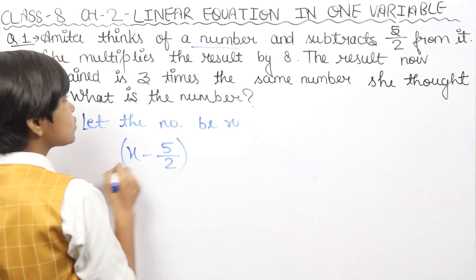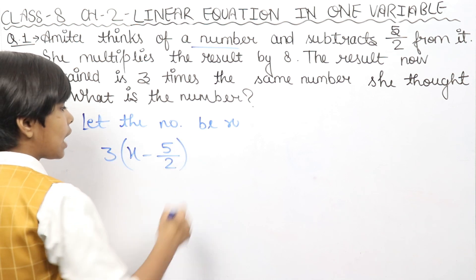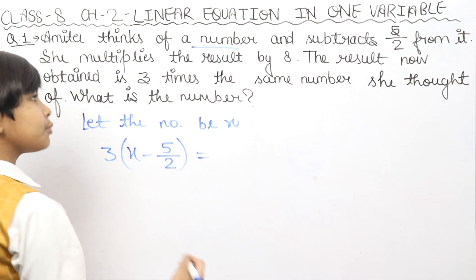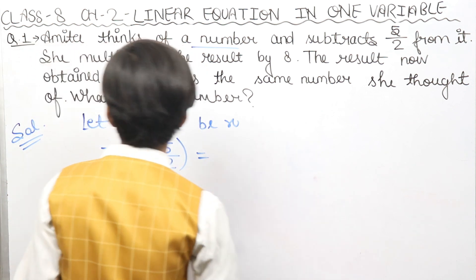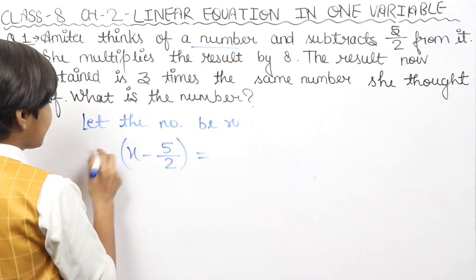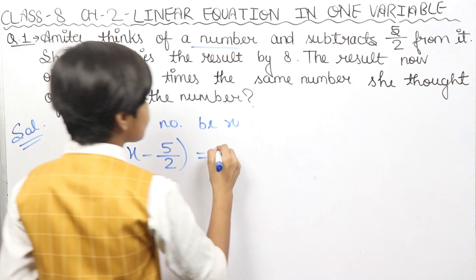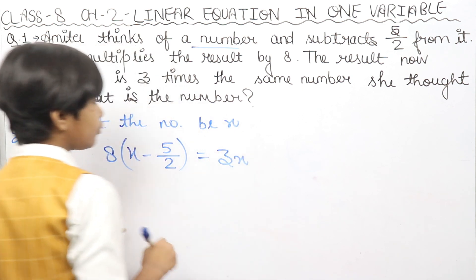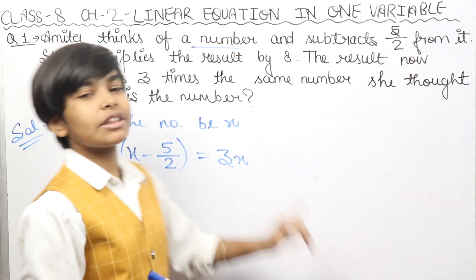Then the result was multiplied by 8, and we got the answer as 3 times the number. So the number was multiplied by 8, and it equals 3x because the number is x, which means 3 times is 3x.